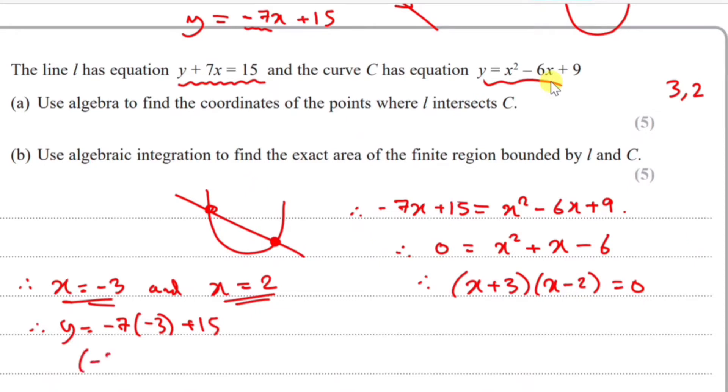If you plug in 2, you should get 1. So the second coordinate is (2, 1). And that's it, part A is done.